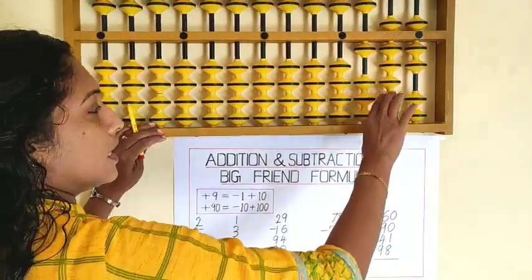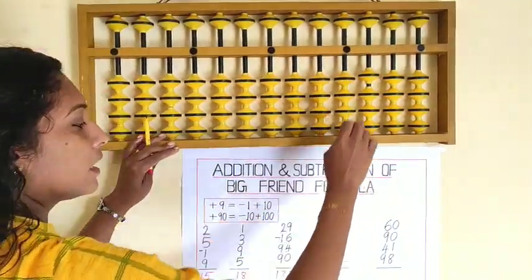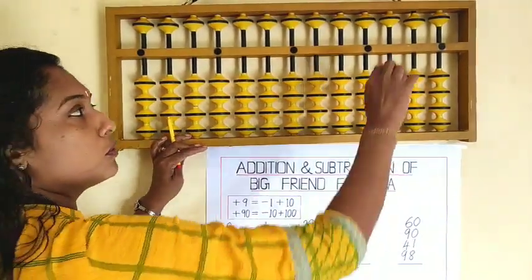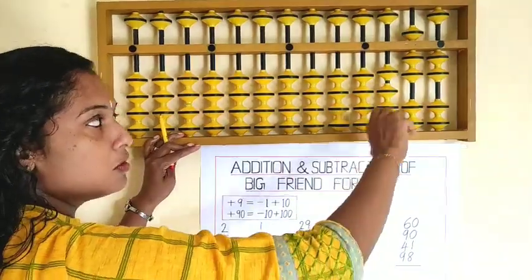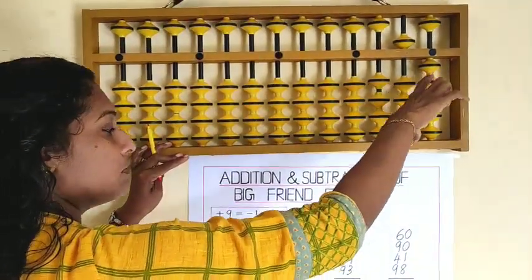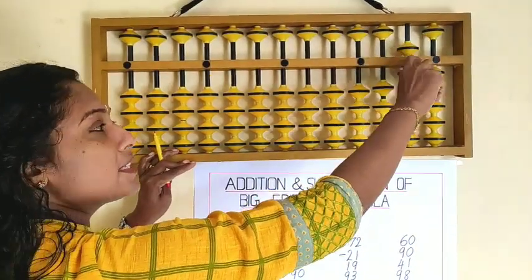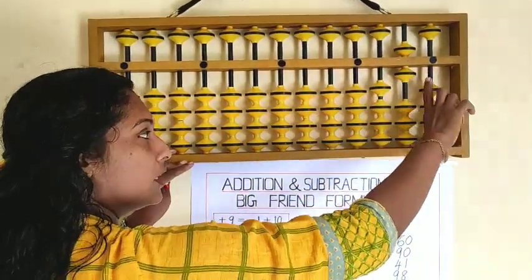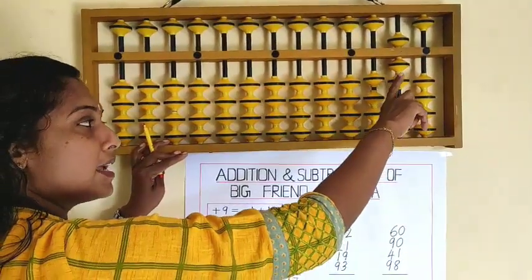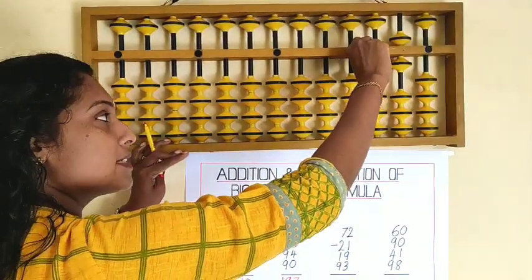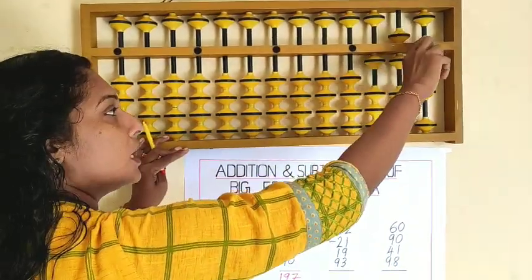Let's go to the next sum. Clear the scale. The sum is 72, minus 21, plus 19 — that is plus 10 plus 9, minus 1, plus 10 — plus 93 — that is plus 90, minus 10, plus 100, plus 3. The answer is 163.